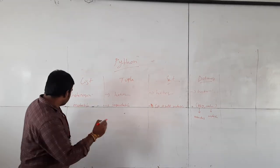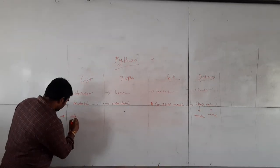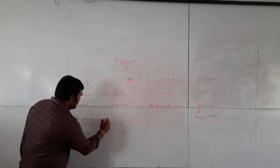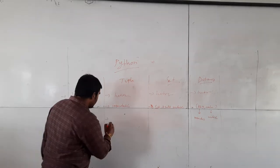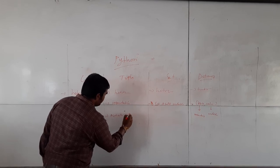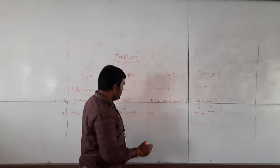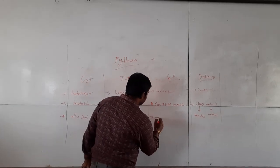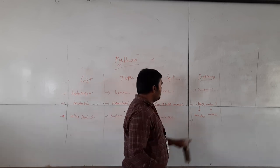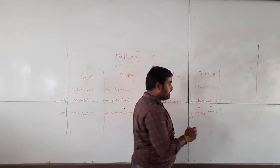List allows duplicates. Tuple does not allow duplicate values. Set also does not allow duplicates. For dictionary, the key does not allow duplicates, but the value allows duplicates.